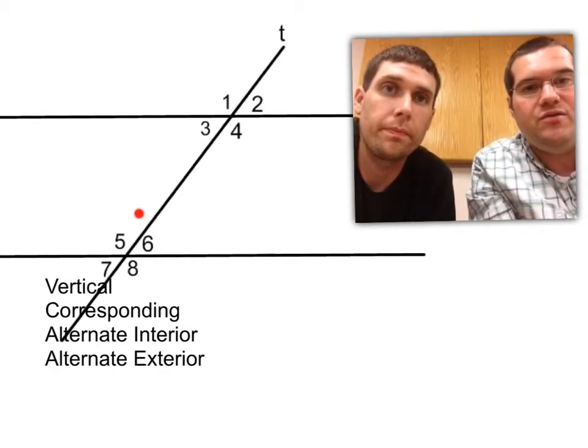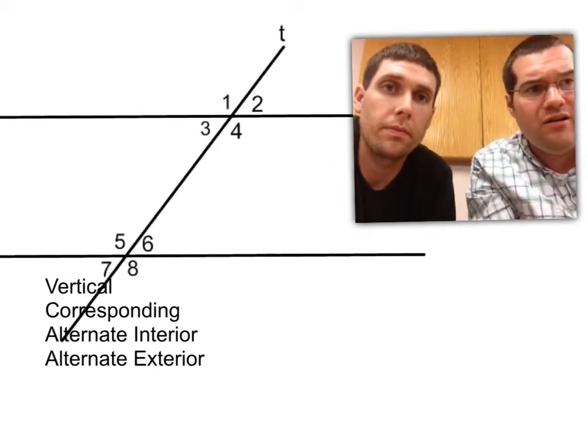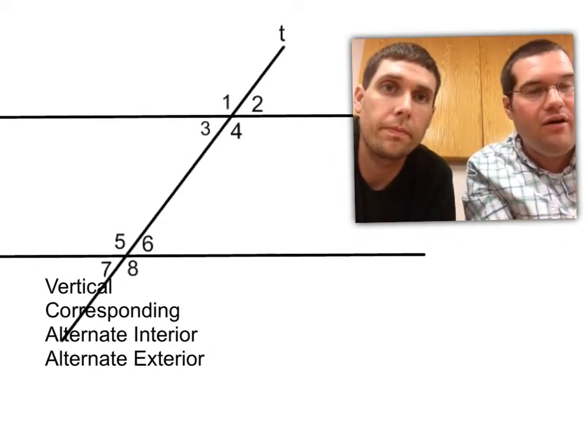So you have these two parallel lines. The inside angles would be 5, 6, and 3, 4. And alternate means to go like every other. So we're talking about alternate of the transversal.